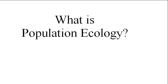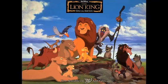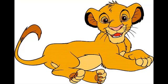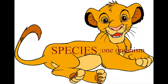For the purpose of this lesson, we're going to zone in on the Lion King, and notably our friend Simba. Simba would be an example of the smallest, most specific level of organization, and that's called the species. There's only one organism.